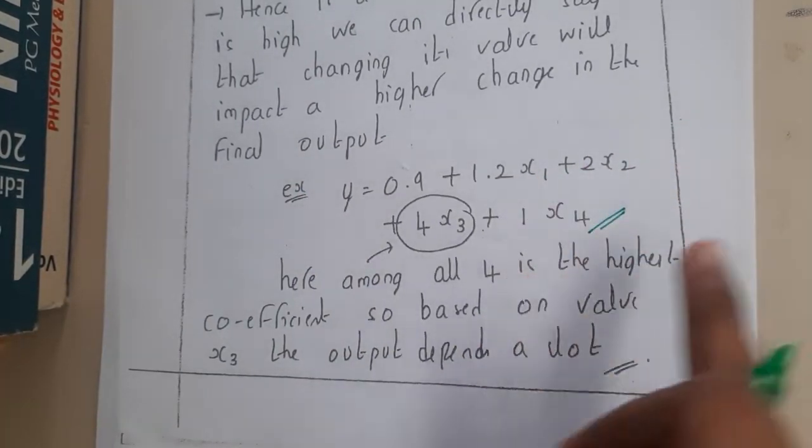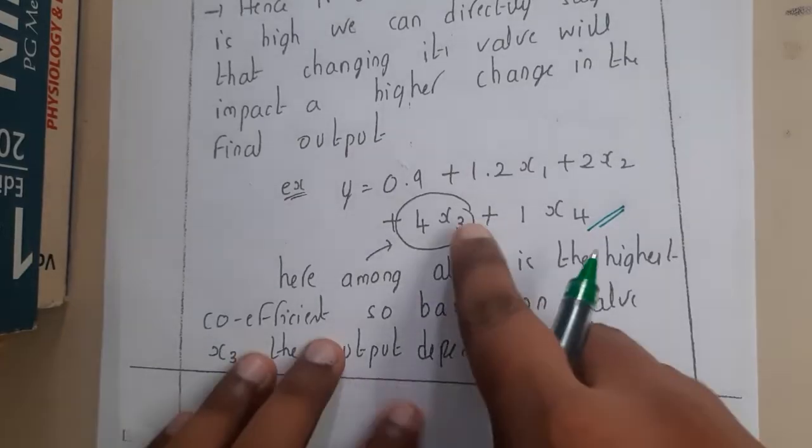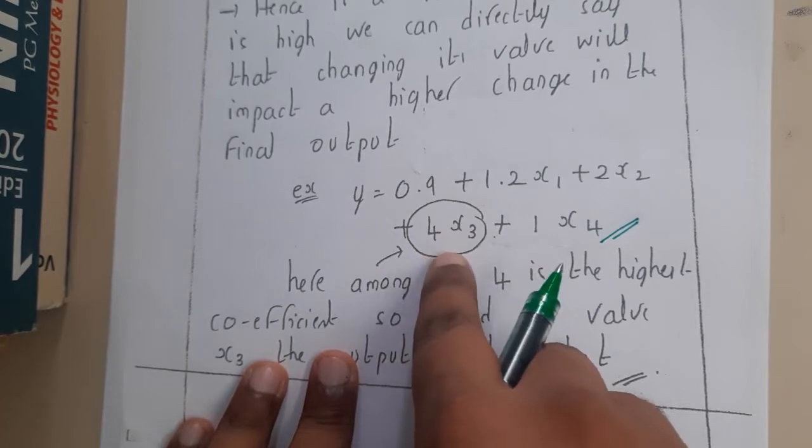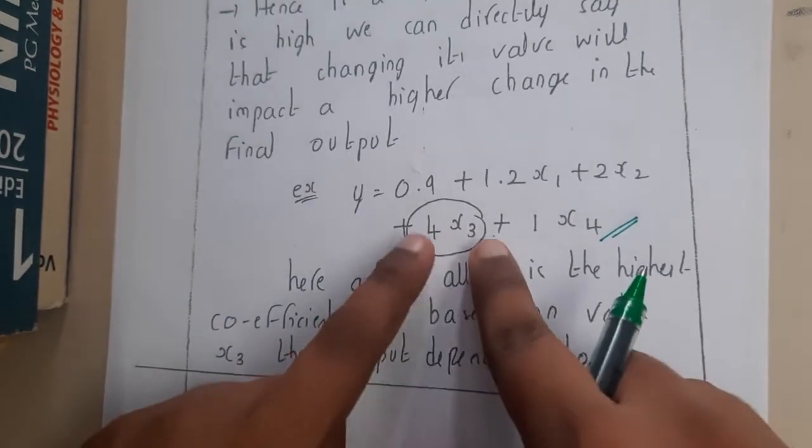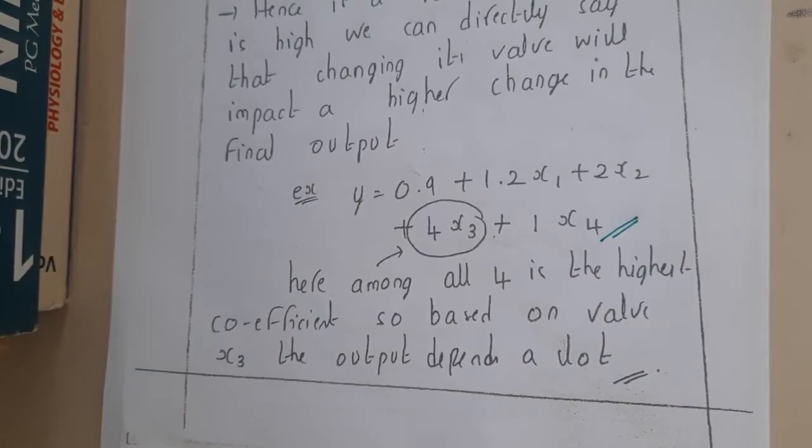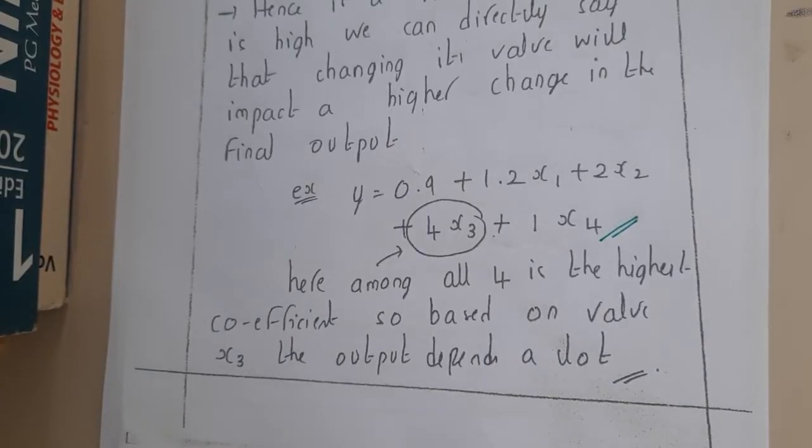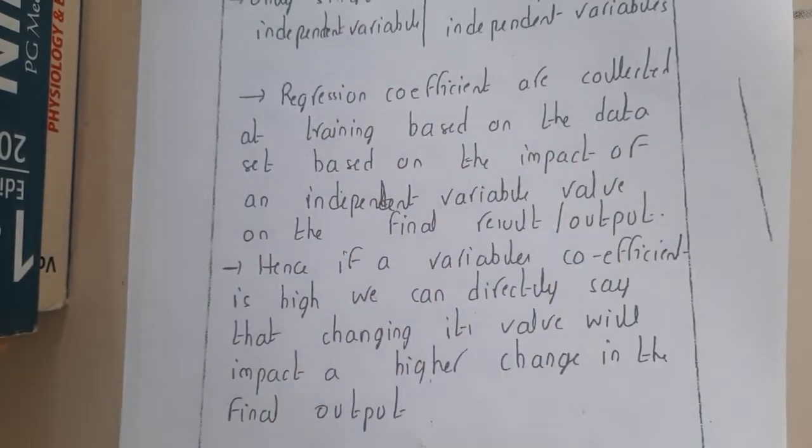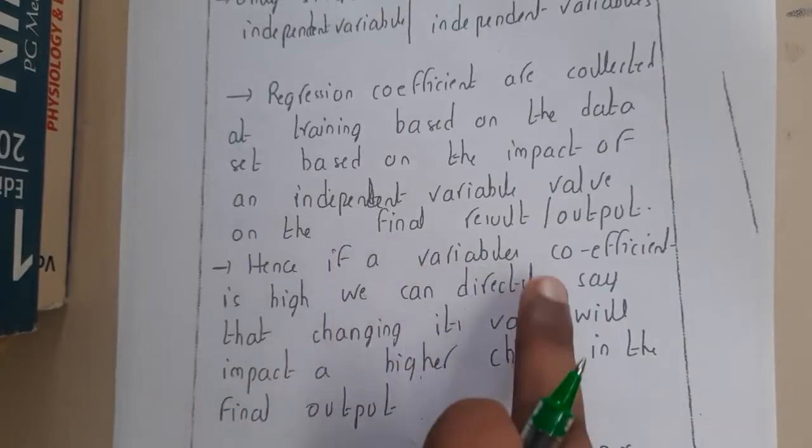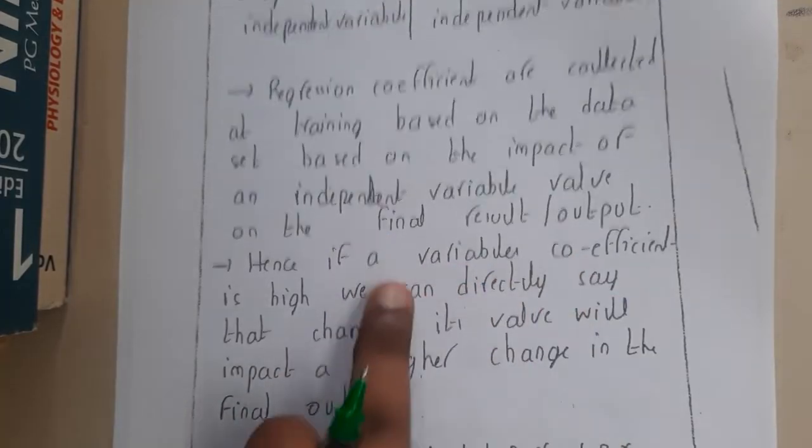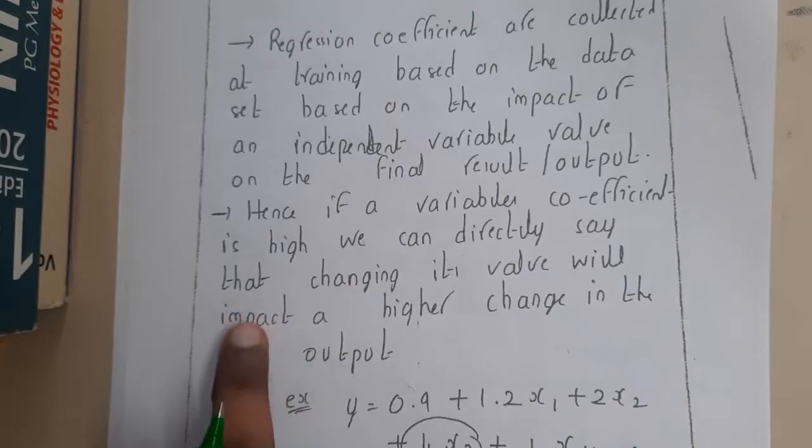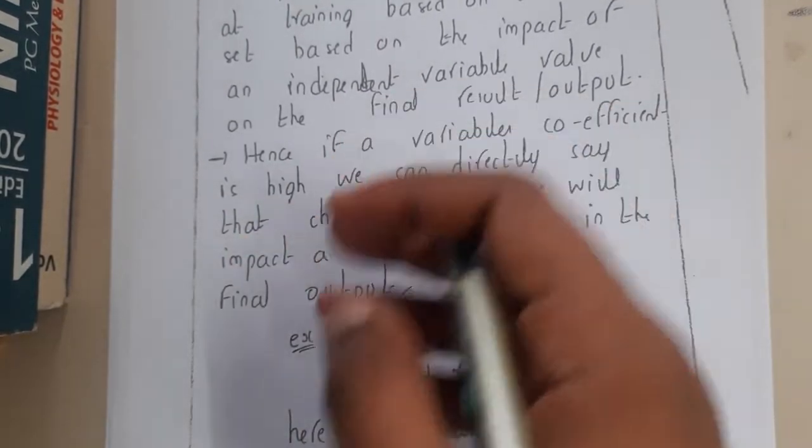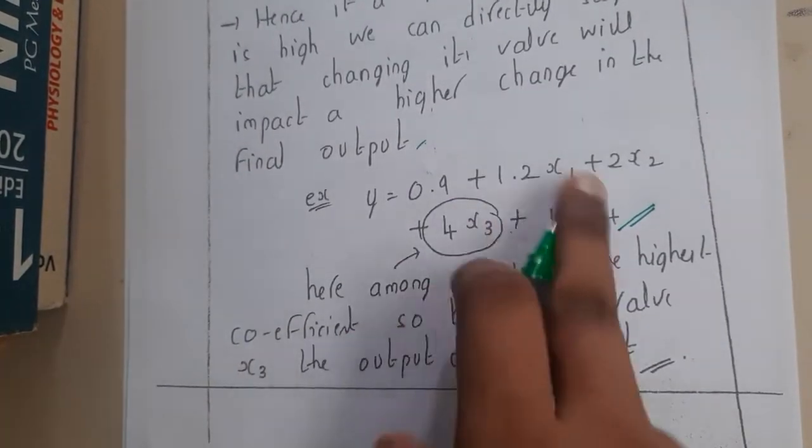Why did I round up this 4x3? By observing, can you say which parameter is really important? x3, right? Because if the value of x3 increases, the y value will also increase a lot because it's multiplied by 4. This is the most relevant value you need to take care of, because if you randomly change it, that will lead to an issue. Hence, if a variable coefficient is high, we can directly say that changes in its value impact drastically.